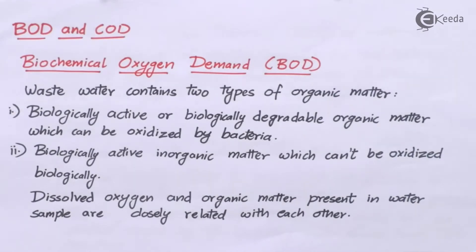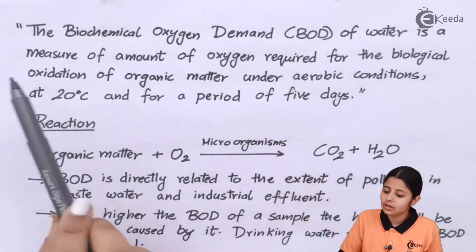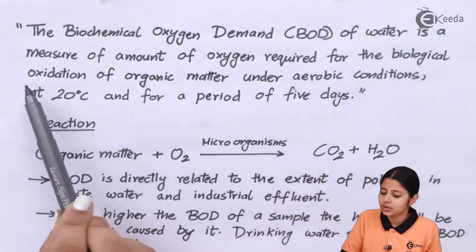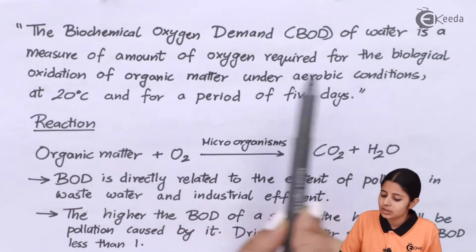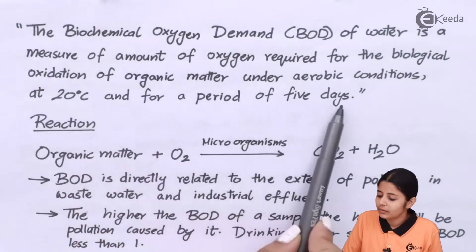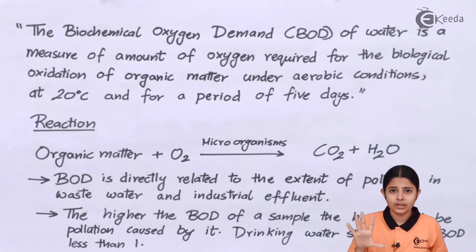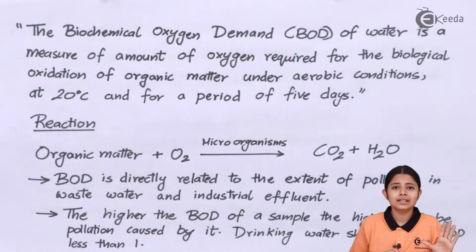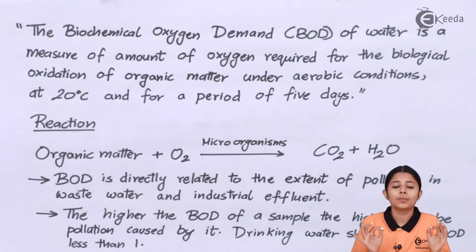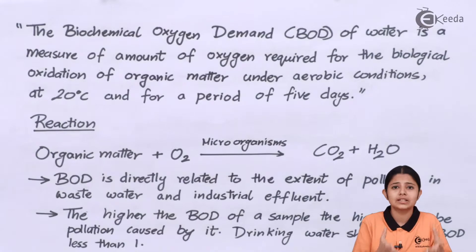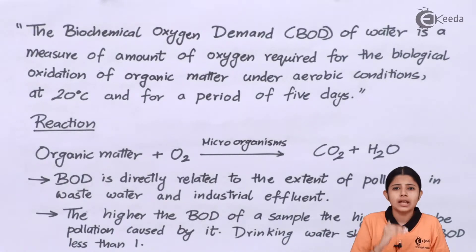The biochemical oxygen demand — BOD — of water is a measure of the amount of oxygen required for the biological oxidation of organic matter under aerobic conditions at 20 degrees Celsius and for a period of 5 days. At 20 degrees Celsius — the optimum temperature for chemical processes — for 5 days, we measure how much oxygen gets used in a water sample under aerobic conditions. This is basically used to calculate the amount of waste present in water, because that waste will use up oxygen and the oxygen level will come down.